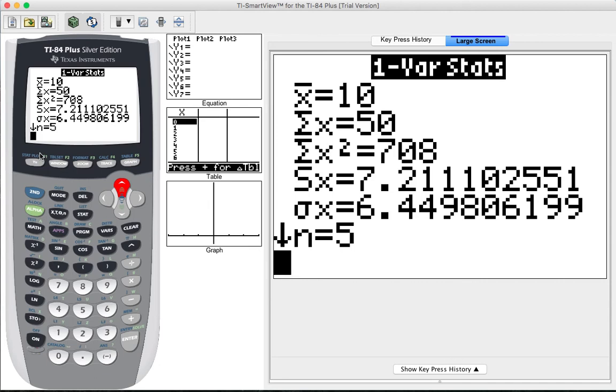Those two values are our sample standard deviation and population standard deviation. What's not here on the output of this function is the variance. We don't have the population or the sample variance, so to find those two values we're going to have to use a different process. It involves taking our values for the standard deviations and squaring them. If we want to find the sample variance, we are going to square the value for the sample standard deviation, so we're going to take this 7.2111 value and square it. On paper, the sample standard deviation is denoted by s and the sample variance is denoted by s squared.